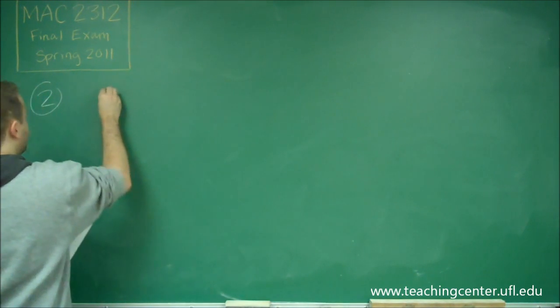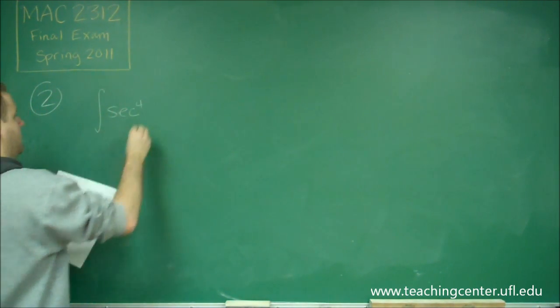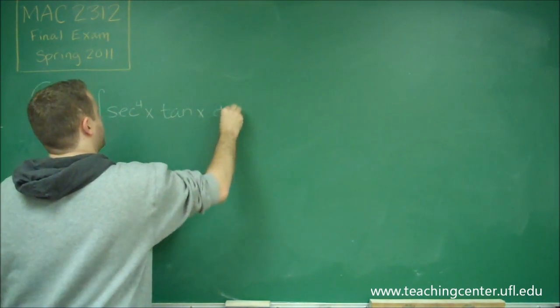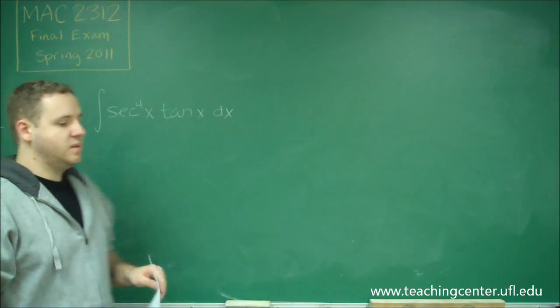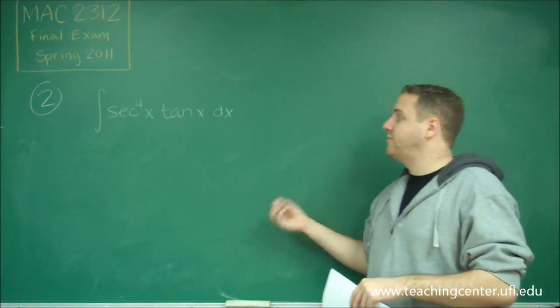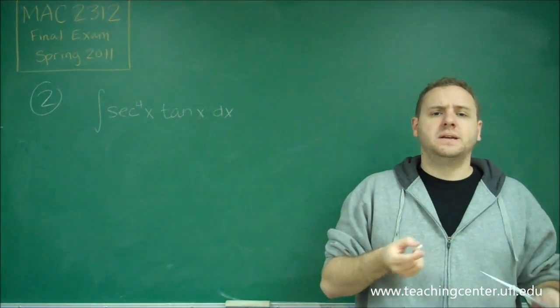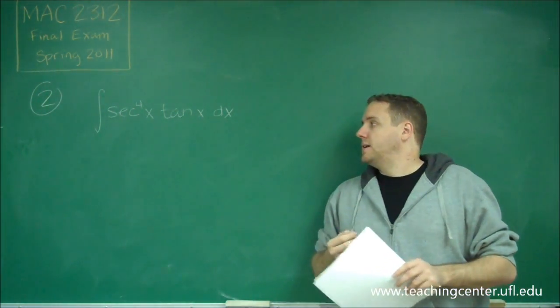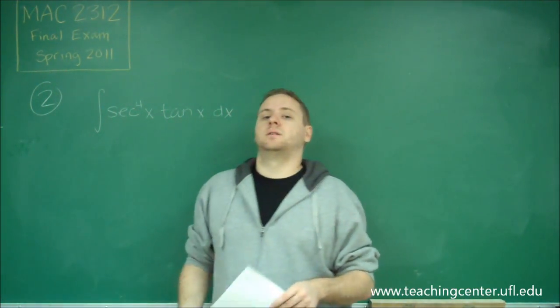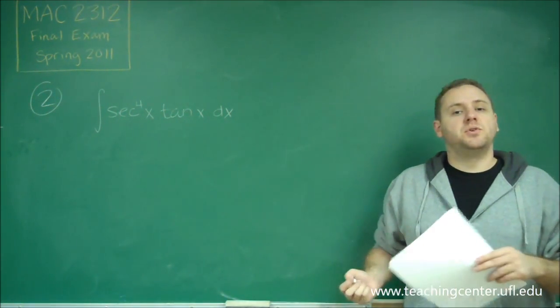So we're going to do the integral of secant to the fourth of x tan x dx. If you remember from when you did these, we had forms for tangent and secant, depending on whether the powers were even and odd. The best way to think about it is if you can possibly get secant squared left over by factoring out, then you want to use u as tangent x.